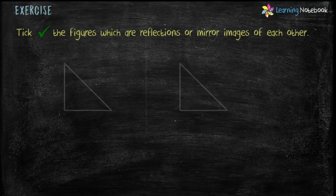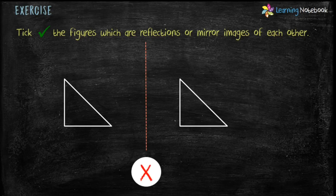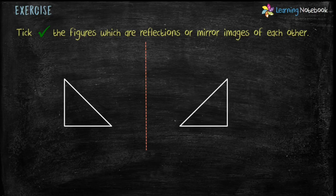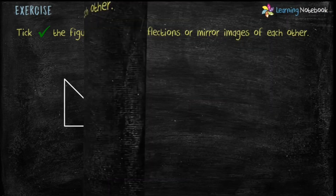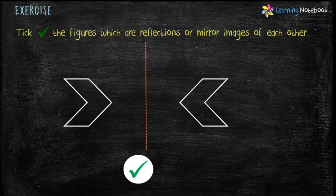Let's do an exercise on mirror images or reflections. The question is: which of the following figures are reflections or mirror images of each other? Look at these figures — these are not reflections of each other, because these figures cannot be folded on each other. The correct mirror images are as shown here. Next, look at these two figures. Are these mirror images or reflections of each other? Yes, because they can be folded on each other.